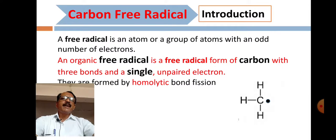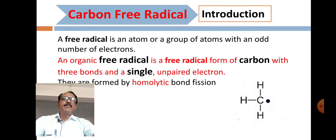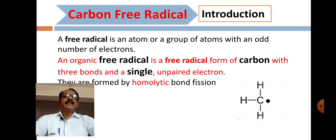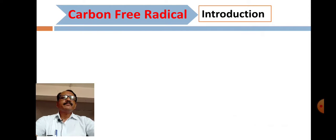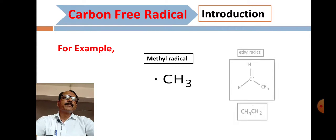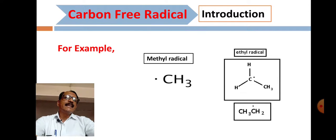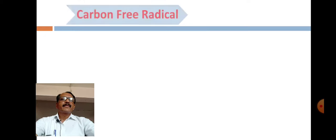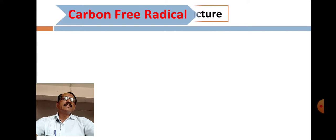Carbon free radicals are formed by homolytic bond fission. Carbocations and carbanions are prepared from heterolytic bond fission, whereas carbon free radicals are formed by homolytic bond fission. For example, this is a methyl radical, and this is an ethyl radical — CH₃CH₂ with a single electron.